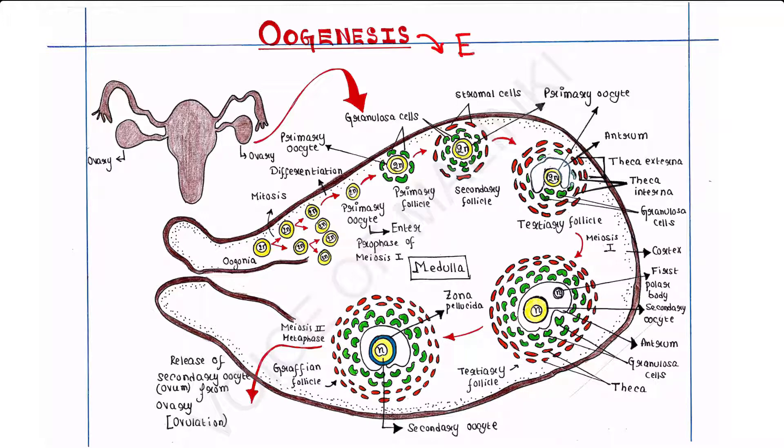This is the process of production of eggs in female gonads. Female gonads are basically a pair of ovaries, so oogenesis takes place inside the pair of ovaries. I'm zooming this ovary. Two ovaries are present here, so I'm zooming this part.